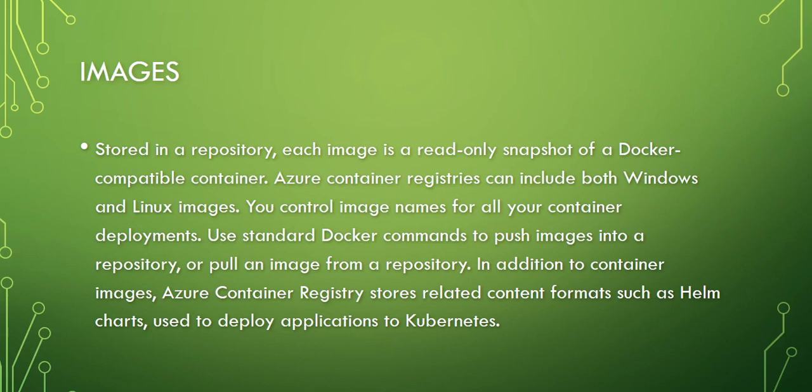Azure Container Registries can include both Windows and Linux images. You control image names for all of your container deployments and use standard Docker commands to push images into a repository or pull an image from a repository. In addition to container images, Azure Container Registry stores related content formats such as Helm charts, used to deploy applications to Kubernetes.